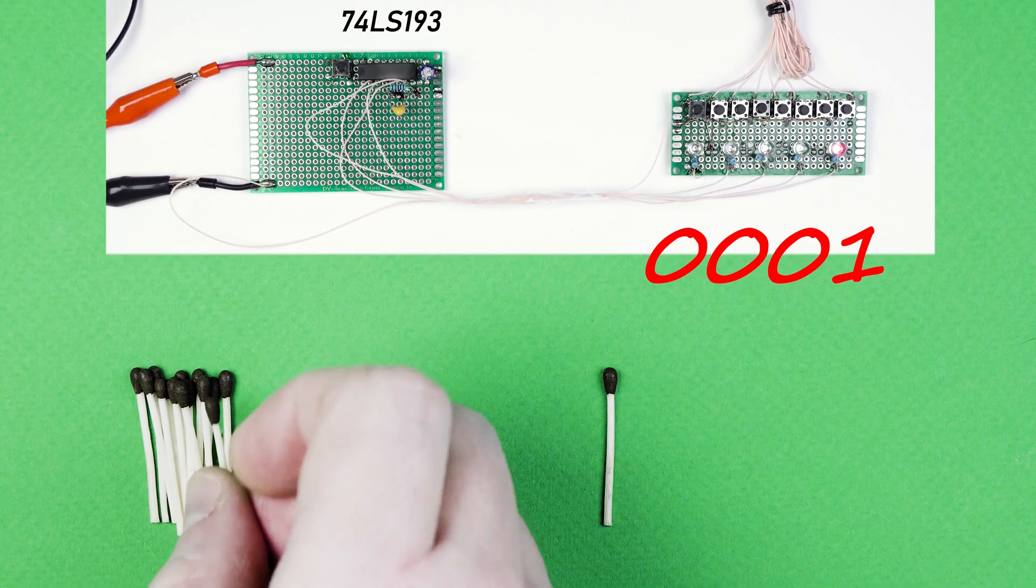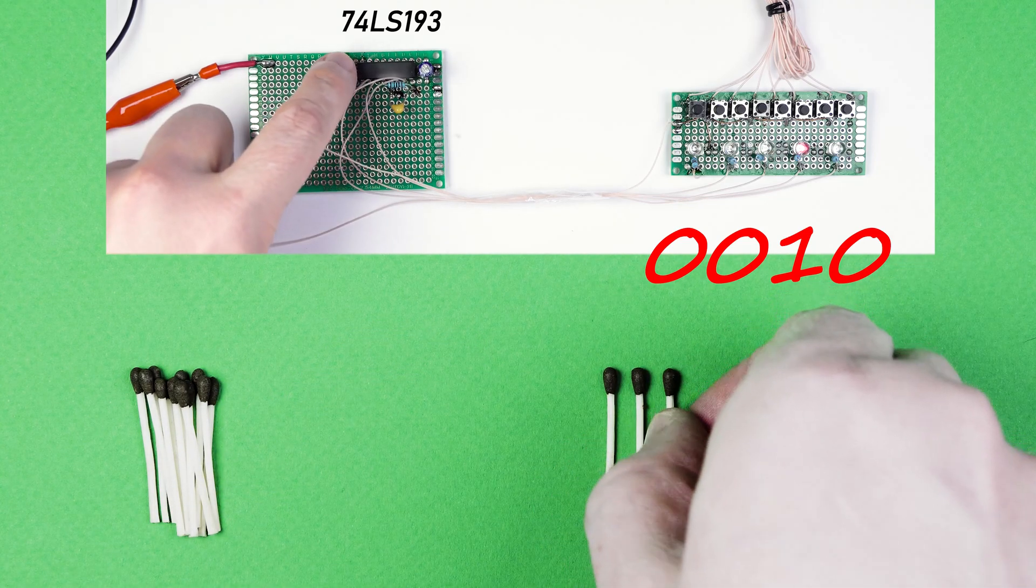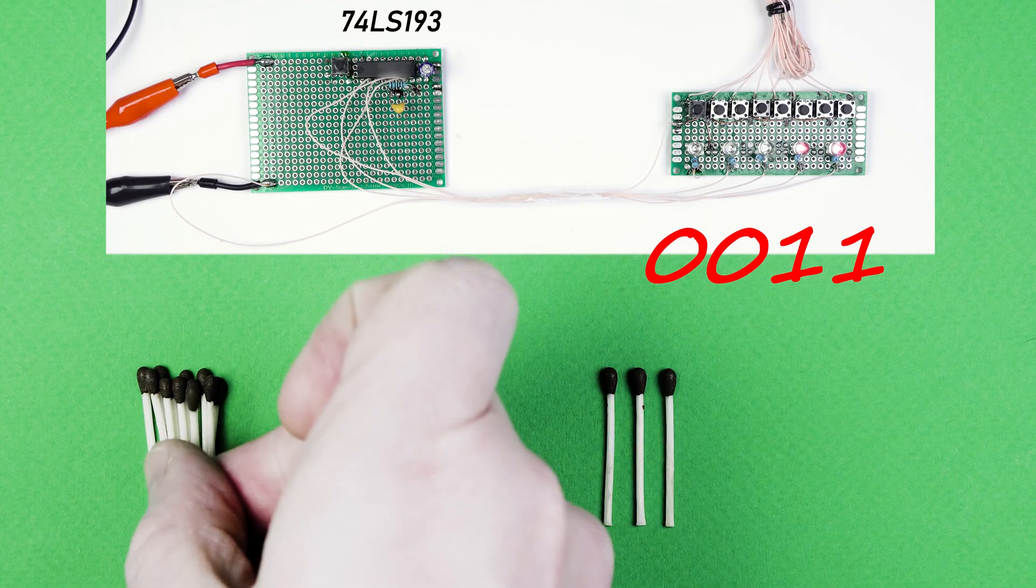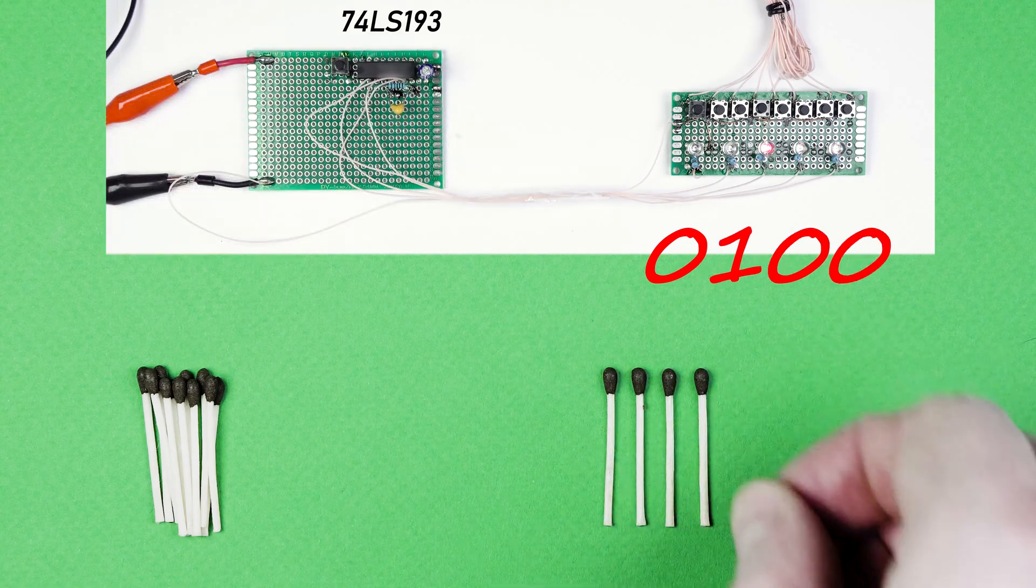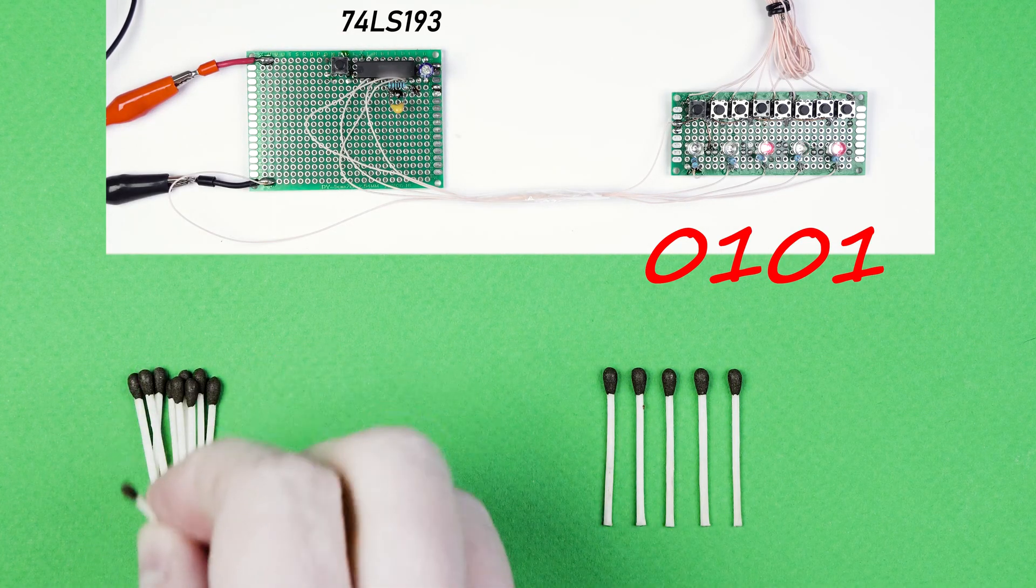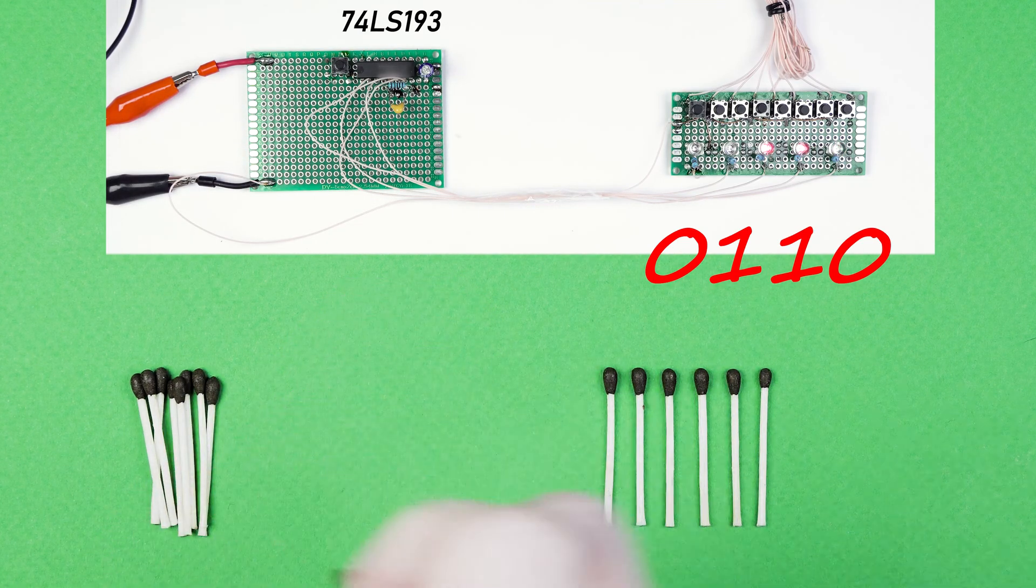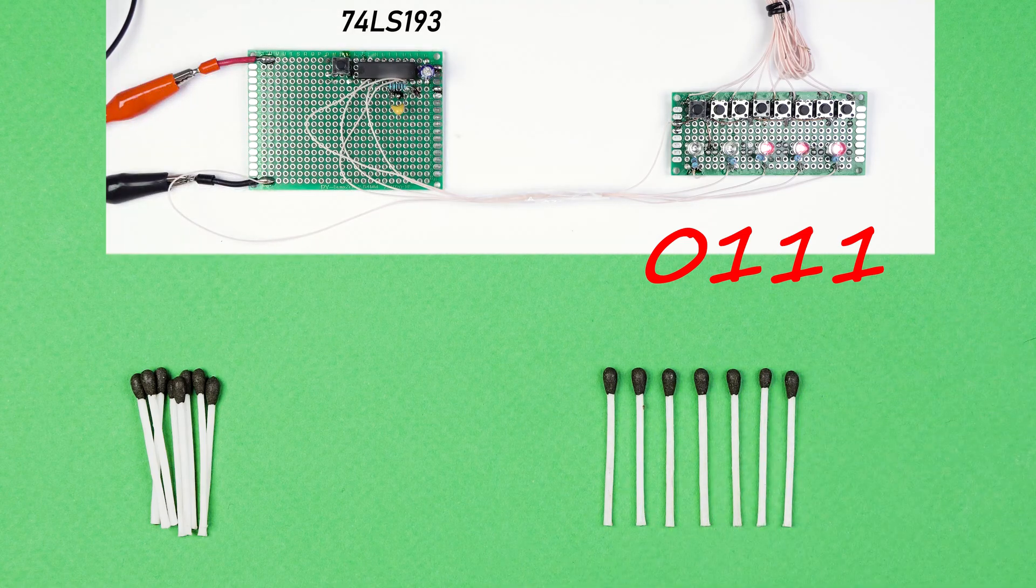In electronics, counting is done by a counter-integrated circuit. So if every match we move could trigger a positive pulse fit to the counter's input, the counter would do the work for us. In fact, in digital devices, all data processing, storage and transmission is done in binary format.